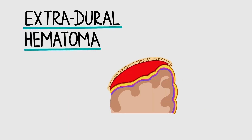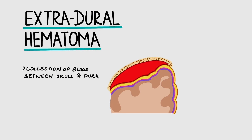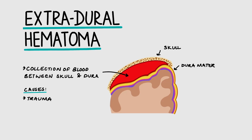Working our way from outside to inside, let's start off with the extra-dural hematoma. This is when there is a collection of blood between the skull and the dura. Some of the causes include trauma, things like a fall or a blow to the head.